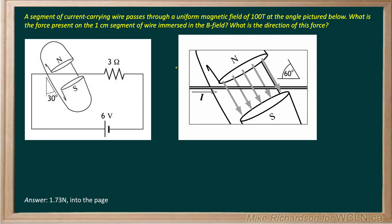A segment of current-carrying wire passes through a uniform magnetic field of 100 Teslas — that's the value of the magnetic field between the north and south poles, directed down and to the right according to the gray arrows on screen. What is the force on a 1 cm segment of the wire that's actually in the field? There's a length of wire from here to here that's 1 cm long.